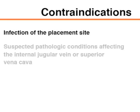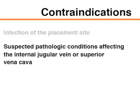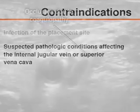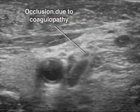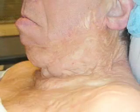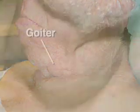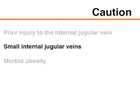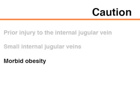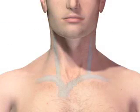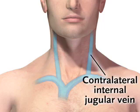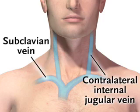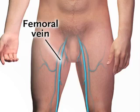General contraindications for internal jugular vein cannulation include infection of the placement site and suspected pathologic conditions affecting the internal jugular vein or superior vena cava, such as occlusion due to coagulopathy. Caution should be used when landmarks are distorted by trauma or other anatomic anomalies, such as a goiter. Be careful when using this site in patients who have had prior injury to the internal jugular vein, have very small internal jugular veins, or are morbidly obese. Under these circumstances, you should consider alternative sites, such as the contralateral internal jugular vein or subclavian vein. The femoral vein should be avoided because of a higher incidence of infection.